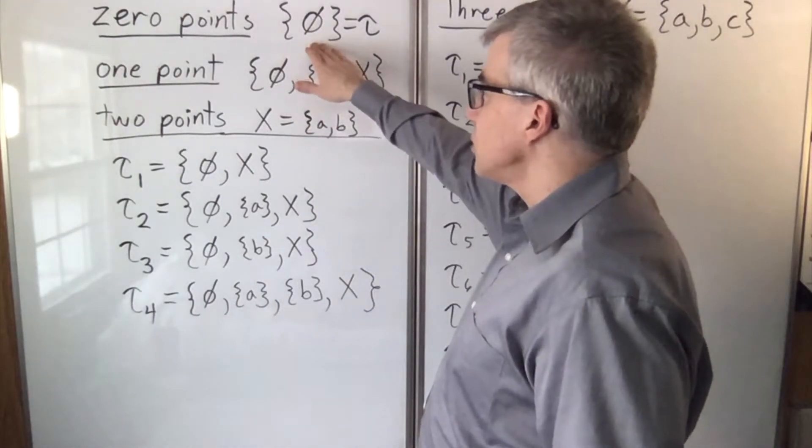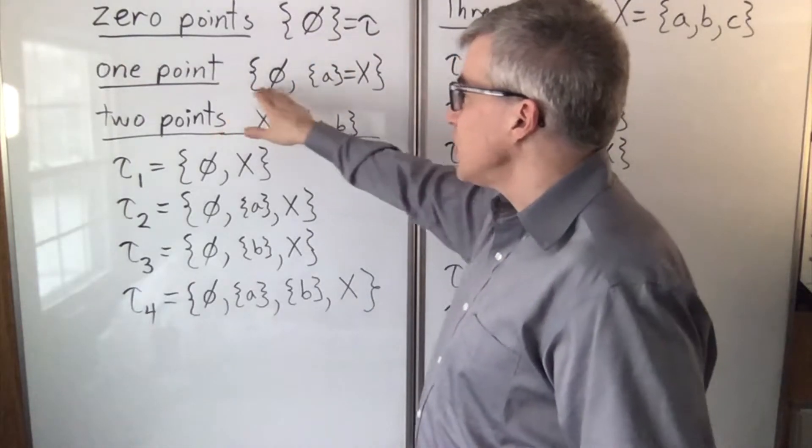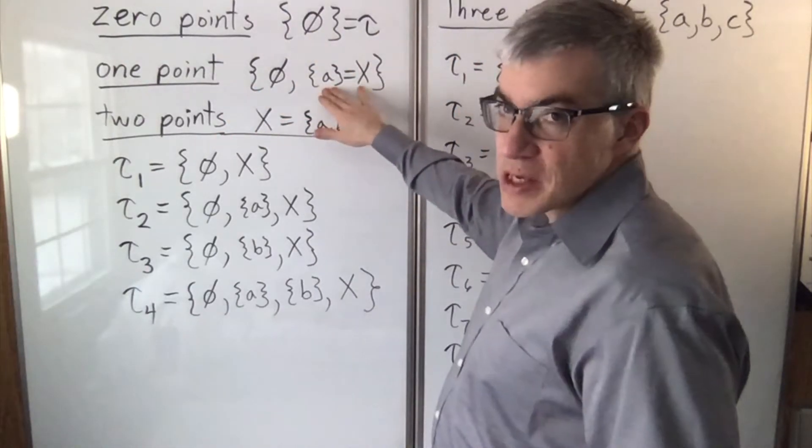If you have zero points, it's just the empty set. If you have one point, the empty set and the point, which is the same thing as the entire space.